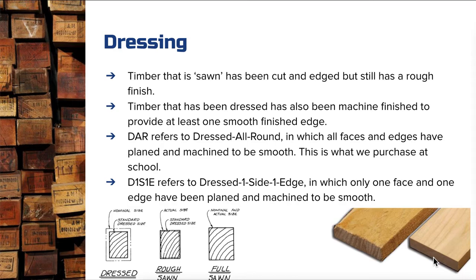The second type you may come across is D1S1E — dressed one side and one edge. It's a little cheaper to purchase because fewer processes have happened: one face and one edge have been planed and machined smooth, while the other two remain in their rough or full sawn state. For use at school you need to at least be working with D1S1E, because with one flat edge and one flat face we can use a table saw and thickness planer to dress the remaining sides — though safety restrictions mean that table saw work must be done by a teacher.